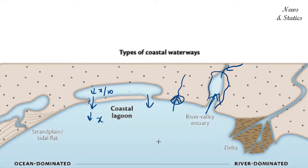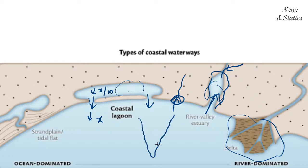Lagoon and estuary are bodies of water in a hollow. But a delta is a body of sediments — a landform at the mouth of a river. Can we compare it with a lagoon? Not at all. But we can compare a delta with an estuary, because both are formed at the mouths of rivers. Throughout the west coast of the Indian subcontinent we have estuaries being formed.